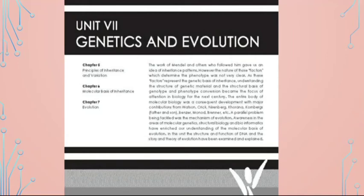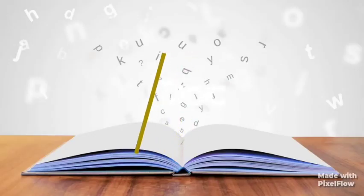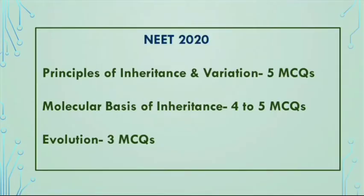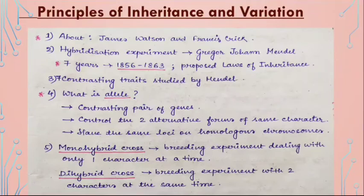Hello everyone, today we are going to discuss the most important topics for NEET 2020 from the unit Genetics and Evolution. In this video I'll be covering some sure-shot concepts from those three chapters. First, the number of expected questions from each chapter: Principles of Inheritance and Variation — at least 5 MCQs; Molecular Basis of Inheritance — 4 to 5 MCQs; and Evolution — 3 MCQs.